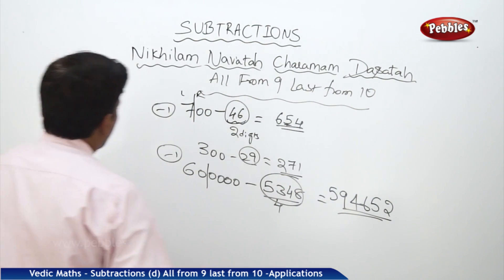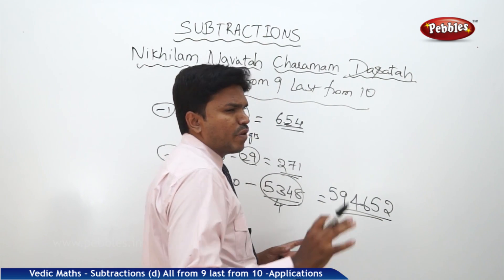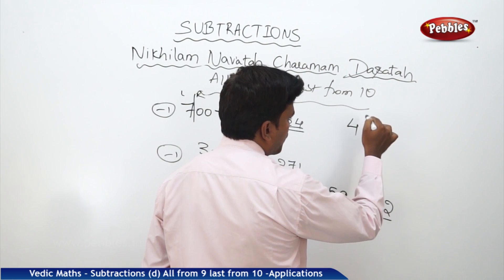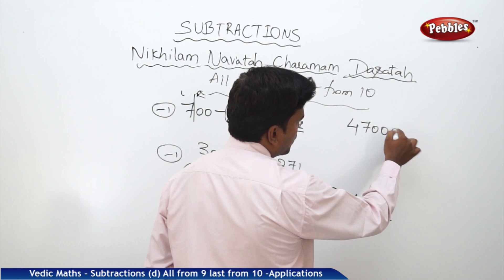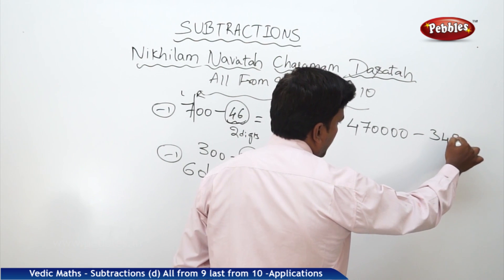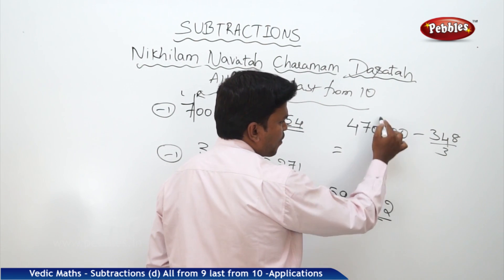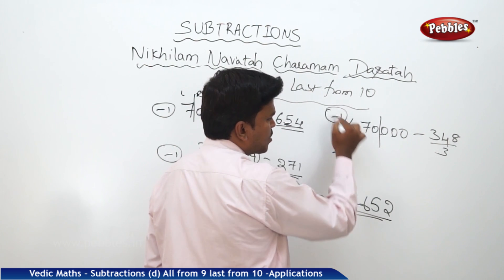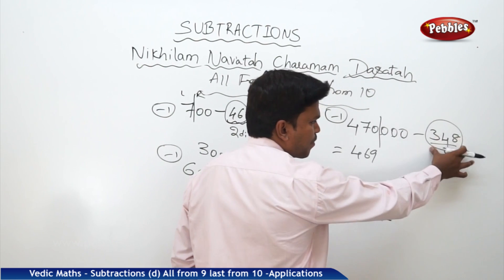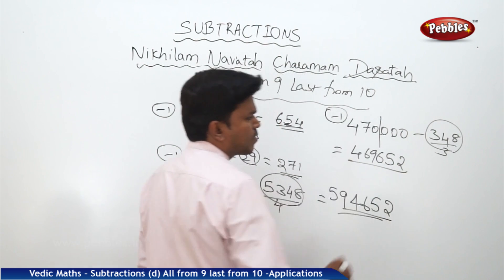One more example, step by step in an easy and simple manner. Suppose 47,00,000 minus 348. How many digits in the subtrahend? Three digits: 1, 2, 3 — make a partition. The left part 470 minus 1 is 469. To get the remaining answer, apply 'all from nine, last from ten' to 348: you get 6, 5, 2. So the answer is 46,96,52 — that is 46,96,652.